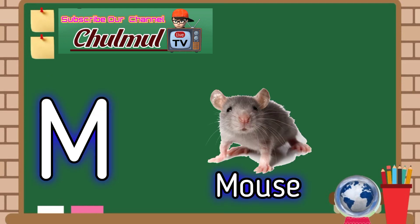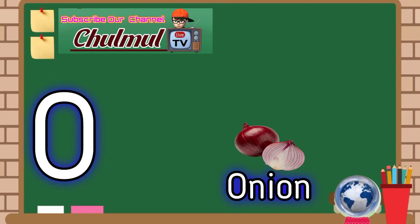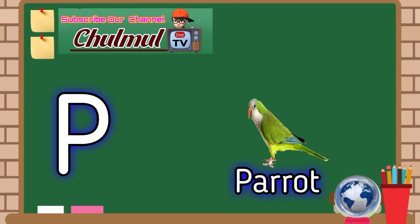M for moose, N for nest, O for union, P for parrot.